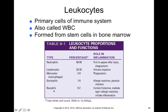Basophils have a lot of histamine granules and contain a lot of histamine. Histamine is a molecule released during the inflammatory and allergy responses, so basophils are important during inflammation. If you inhibit basophils, you inhibit the release of histamine and therefore reduce things like allergic reactions or inflammation.